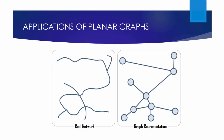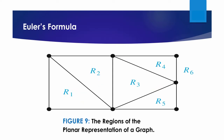The planarity of a graph is also useful in the design of road networks. We can model a road network connecting cities using a simple graph with vertices representing the cities and edges representing the highways connecting them. We can build this road network without using underpasses or overpasses if the resulting graph is planar. A planar representation of a graph splits the plane into regions, including an unbounded region. For instance, the planar representation of the graph in Figure 9 splits the plane into 6 regions, labeled in the figure.